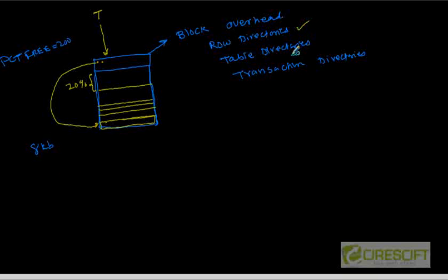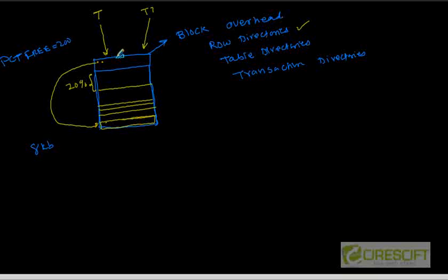Table directories are going to contain which table is inserting data to this block. It may happen that another table T1 can also insert data to this block if table T is pretty small and doesn't have many rows. In that case, in the table directories we are going to keep which tables are inserting to this block — so in this case it will be T and T1.